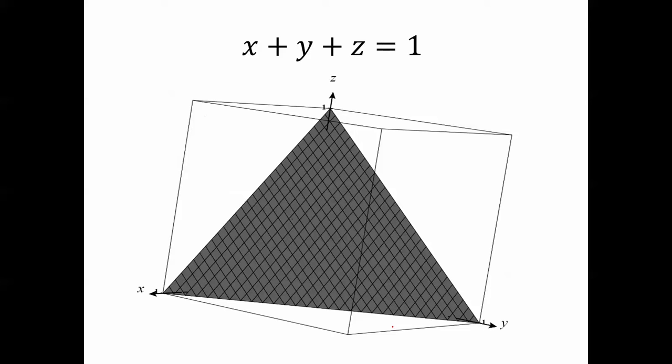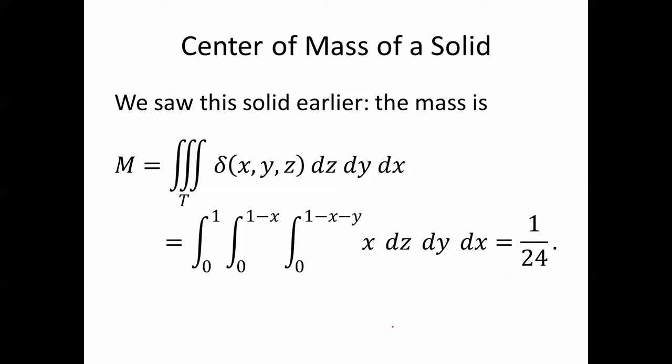We've seen this solid before. It looks like this. This is a plane x plus y plus z equals 1. We saw this solid earlier, the mass is the triple integral of the density, delta of xyz, dz dy dx.